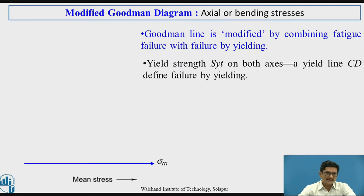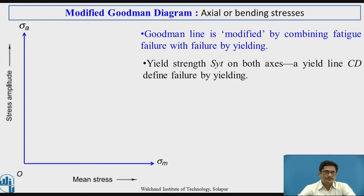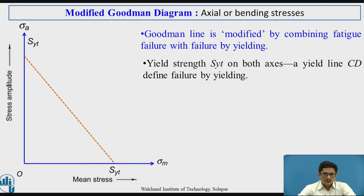Mean stress is taken on the x-axis and stress amplitude on the y-axis. I need to put SYT on the x-axis and SYT on the y-axis, then draw a line inclined at 45 degrees to both axes. This angle is 45 degrees. At the intersection on the x-axis, I mark point C, and on the y-axis, point D. The line CD represents the yielding line — it defines the controlling criterion for yielding.